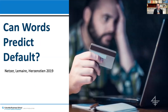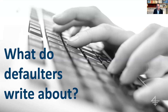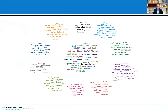Another application: predicting loan default. We went to Prosper.com, a peer-to-peer lending platform where people give loans to one another. People wrote a short text voluntarily when applying for a loan — why they needed the loan, explaining their situation. We asked: can we use this text to predict whether the person would eventually default? We found that the words do help predict above and beyond all of the typical financial information. The writing style was also informative. We put words in word clouds where size indicates association with default. People who defaulted talked a lot about hardship and difficult financial situations — which eventually probably caused the default — and this was predictive above and beyond things like FICO score.